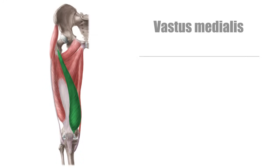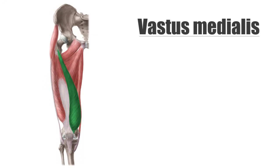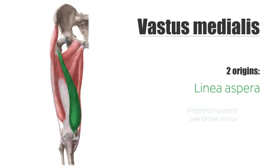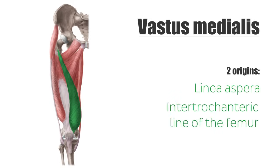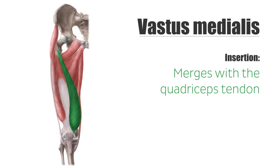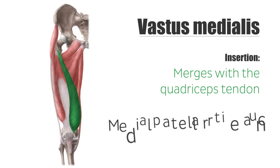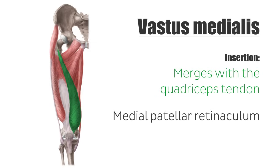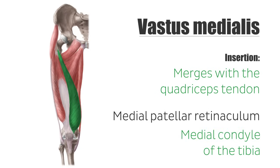The vastus medialis muscle runs spirally around the shaft from the linea aspera and intertrochanteric line of the femur, and merges with the quadriceps tendon for the most part. A second part, referred to as the medial patellar retinaculum, bypasses the patella medially and inserts at the medial condyle of the tibia.